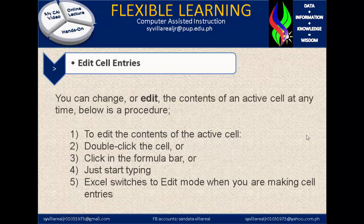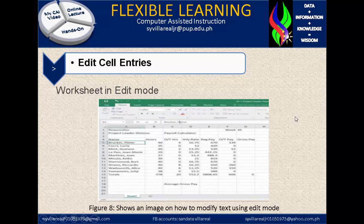Edit cell entries. You can change or edit the contents of an active cell at any time. To edit the content of the active cell, double-click the cell or click in the formula bar, or just start typing. Excel switches to edit mode when you are making cell entries. Figure 8 shows an image on how to modify text using edit mode. You can click the label and press F2 for edit mode, or double-click the active cell.